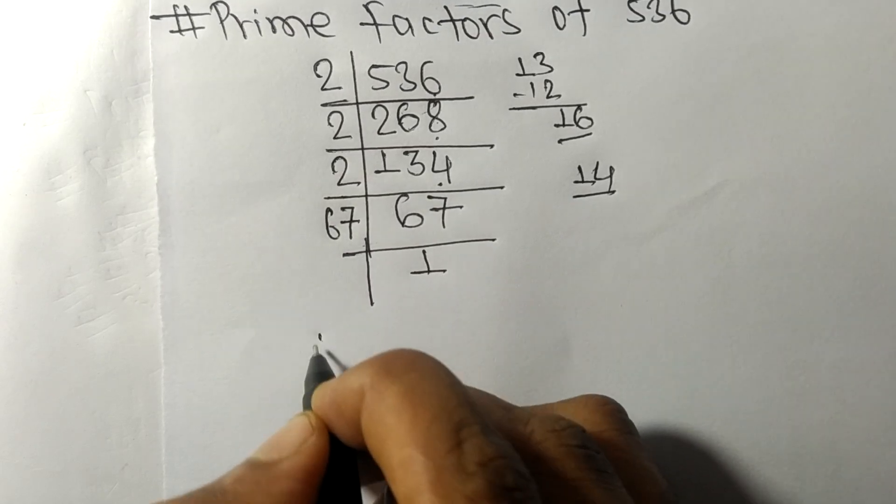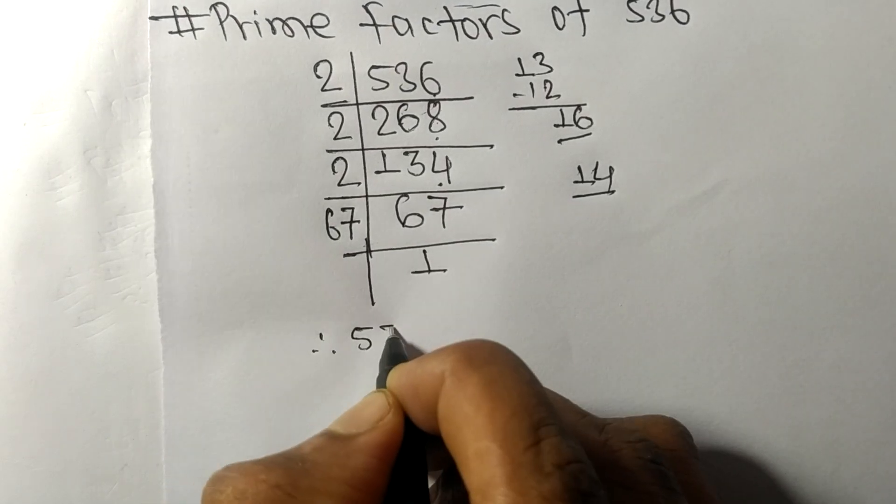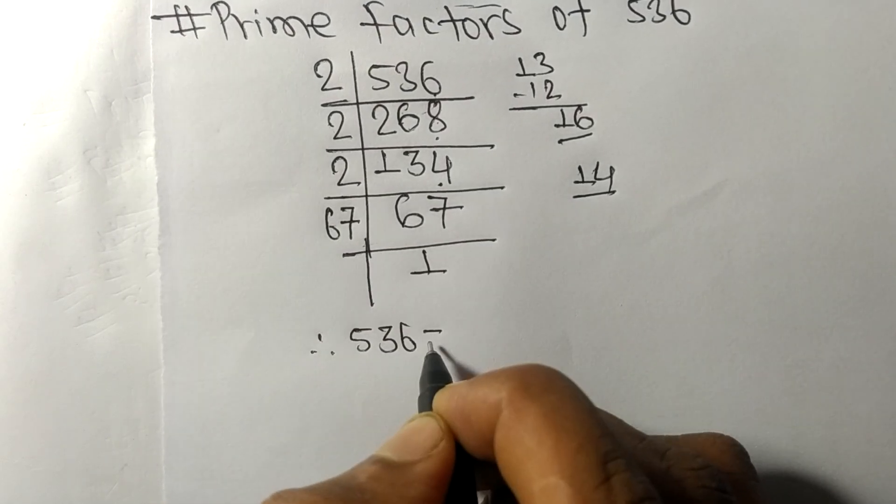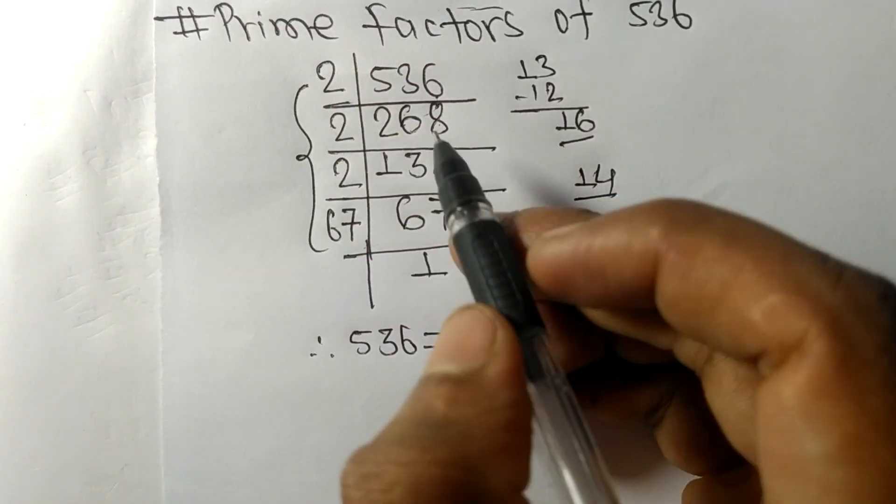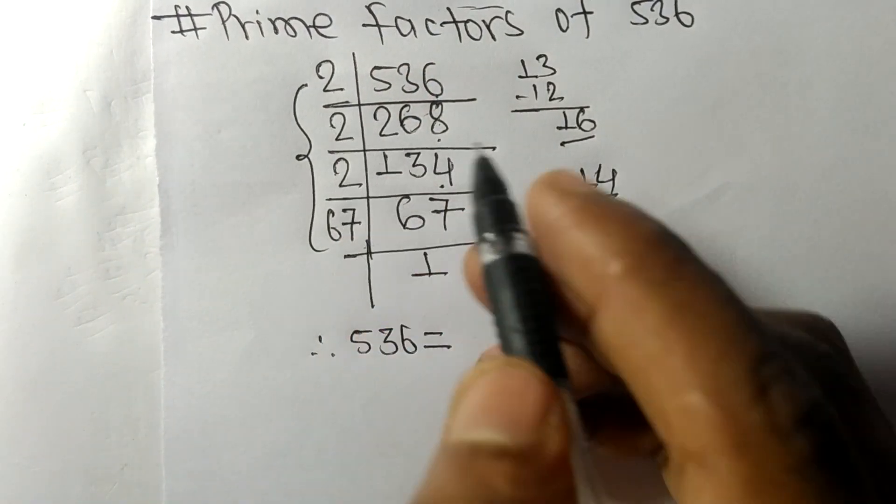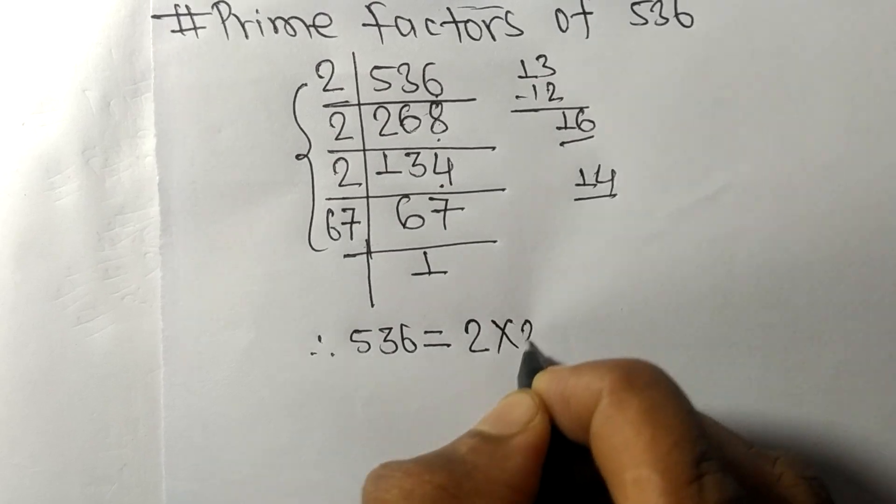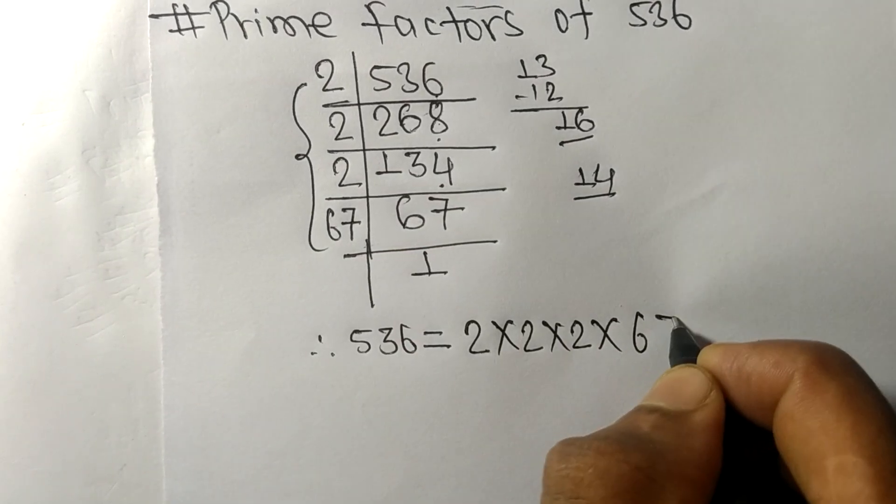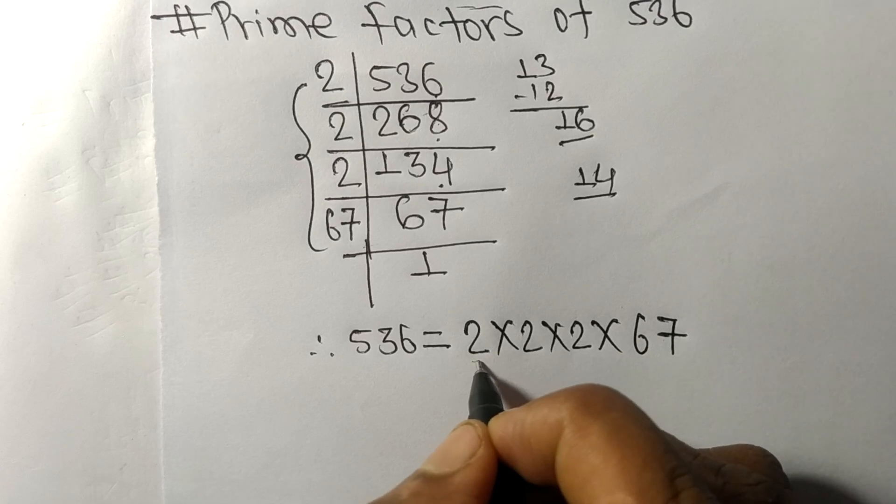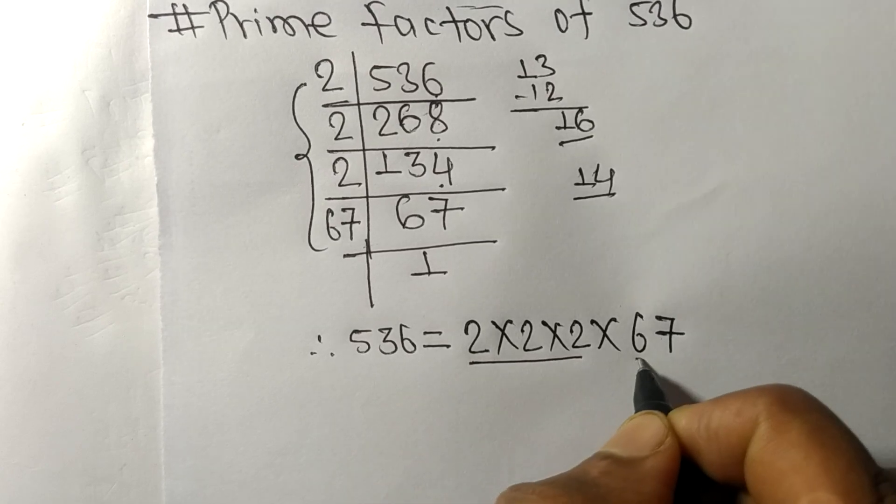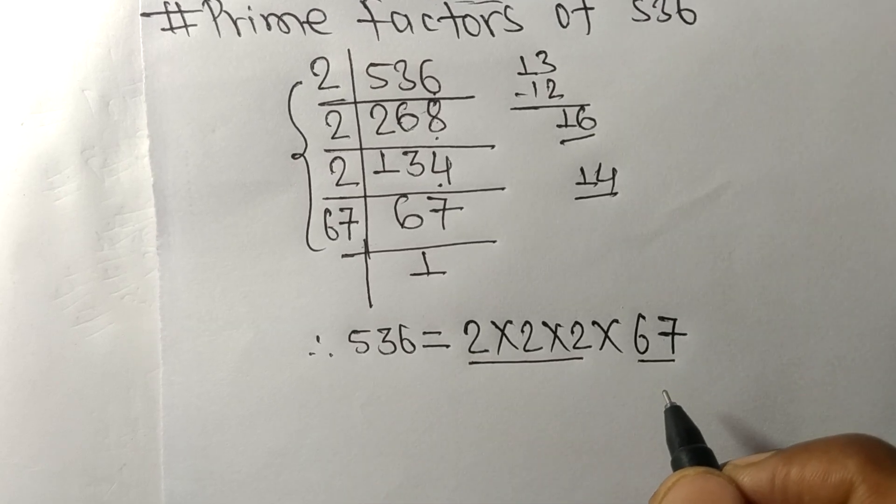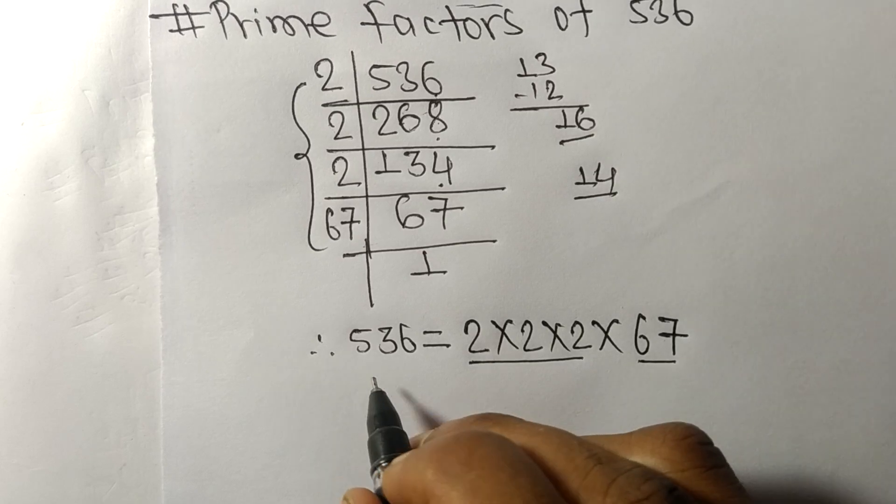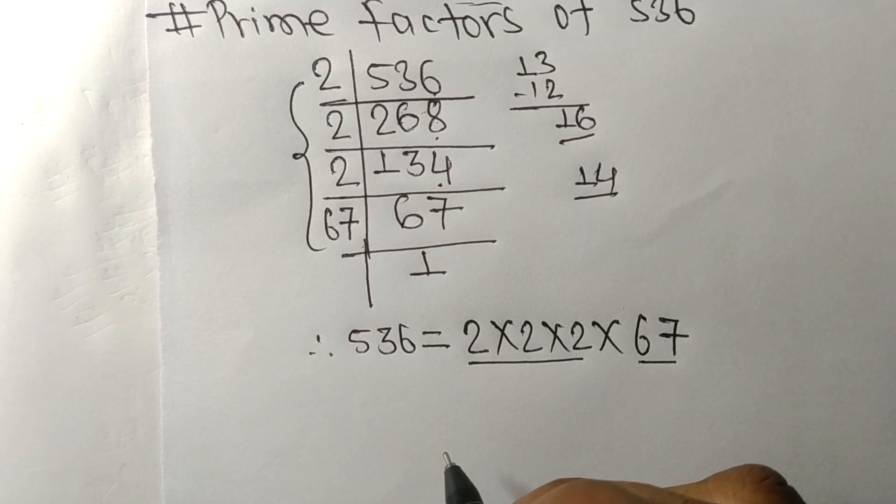Therefore, 536 is equal to, from this side we have 1, 2, 3 times 2, so 2 to the power of 3 times 67. These 2 and 67 are the prime factors of 536.